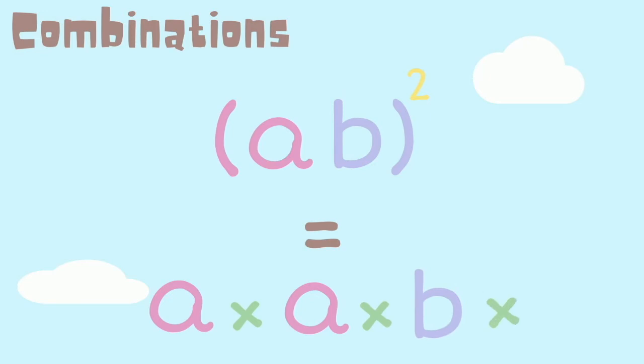But in this example with brackets both letters would be squared. Whereas in this example only the letters inside the brackets would be cubed.